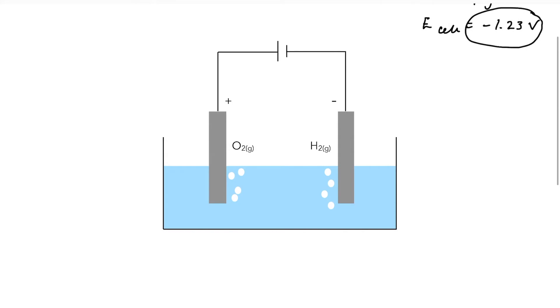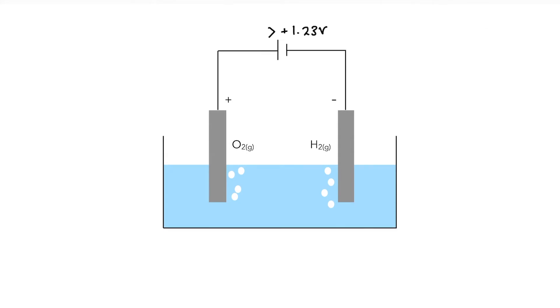So let's have a look at the setup. We have two electrodes. We have got an anode and a cathode. These electrodes need to be inert. So for example, they might be composed of graphite or perhaps platinum.